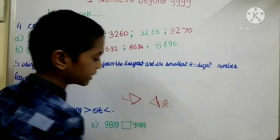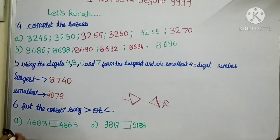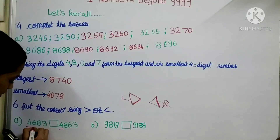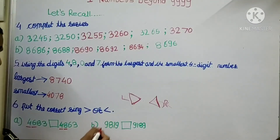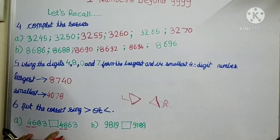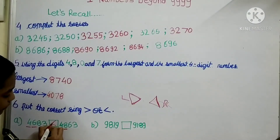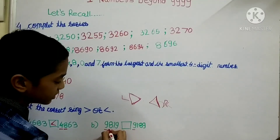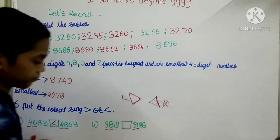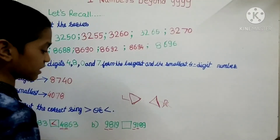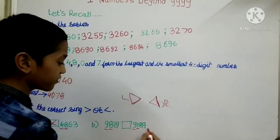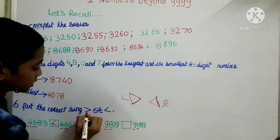Think about the left side number. To put the sign, check the first digit — 4 is equal on both sides. Then 6 is here and 8 is here, so we put the less than sign because the left side number is smaller. Now, 9 and 9 are equal, so check the hundreds place — there is 8 and 1. Eight is bigger than 1, so the left side number is greater, and we put the greater than sign.